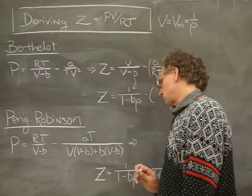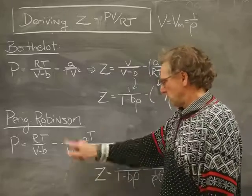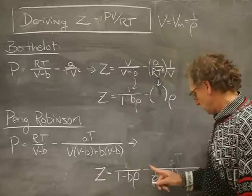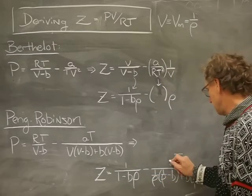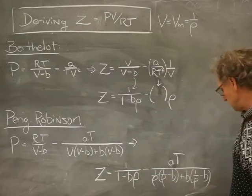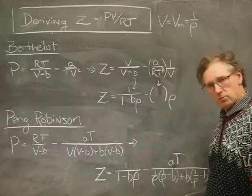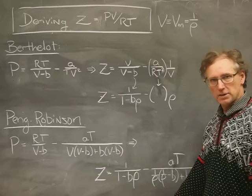What about the second term? It's straightforward. Everywhere I see a volume, I replace it with 1/ρ. I leave the AT term in the numerator. Now we have Z in terms of the density for Peng-Robinson. All the other gases work the same way.